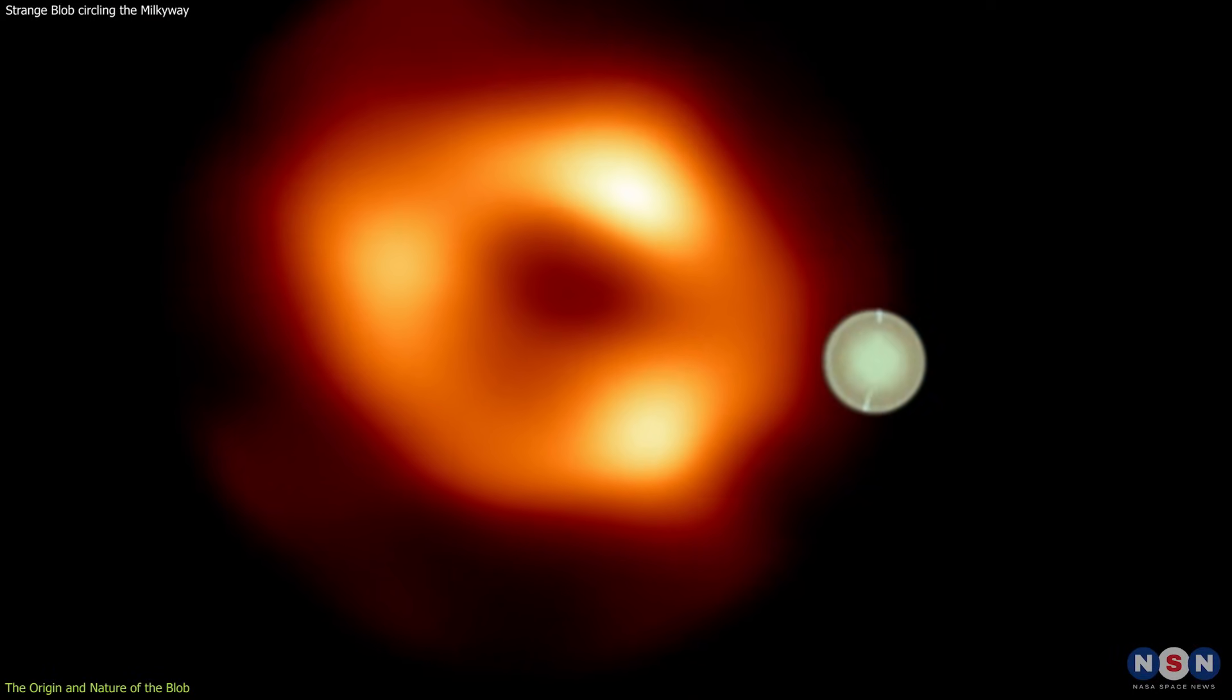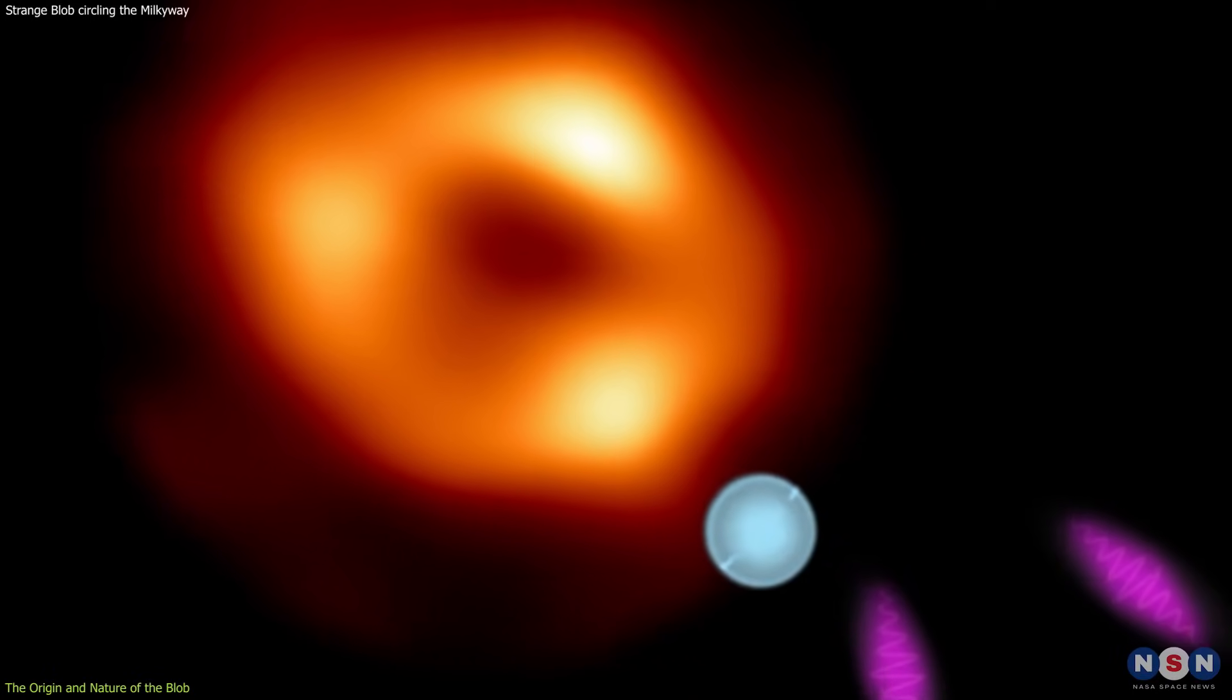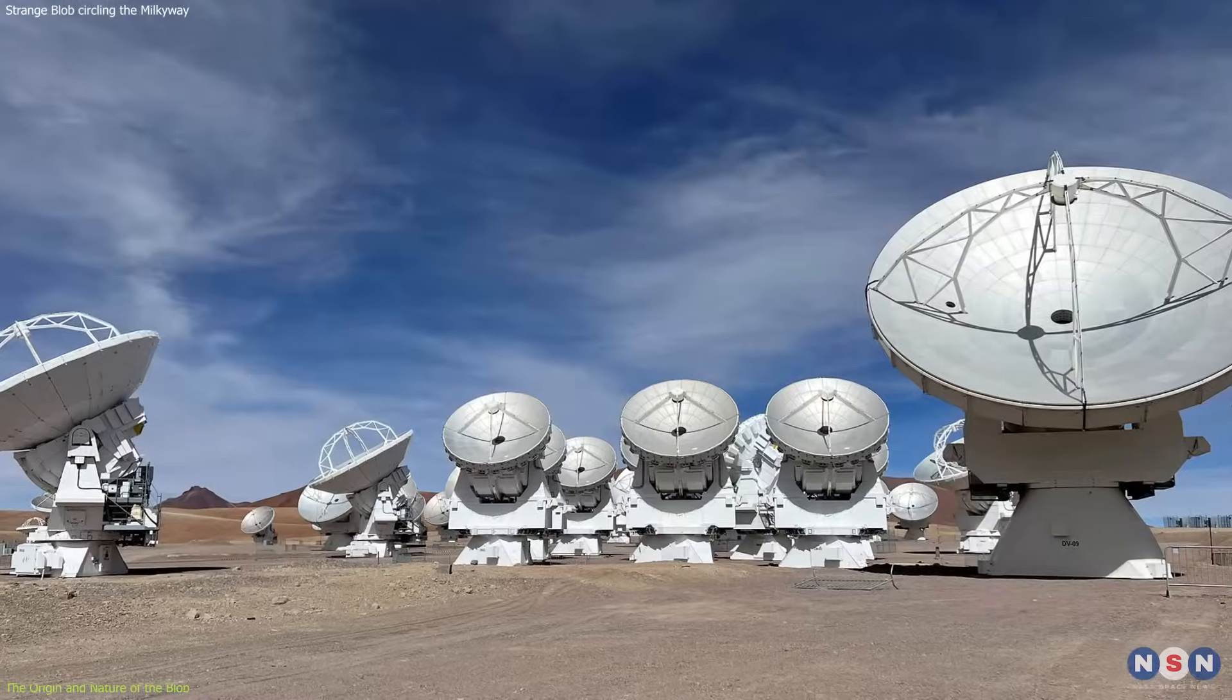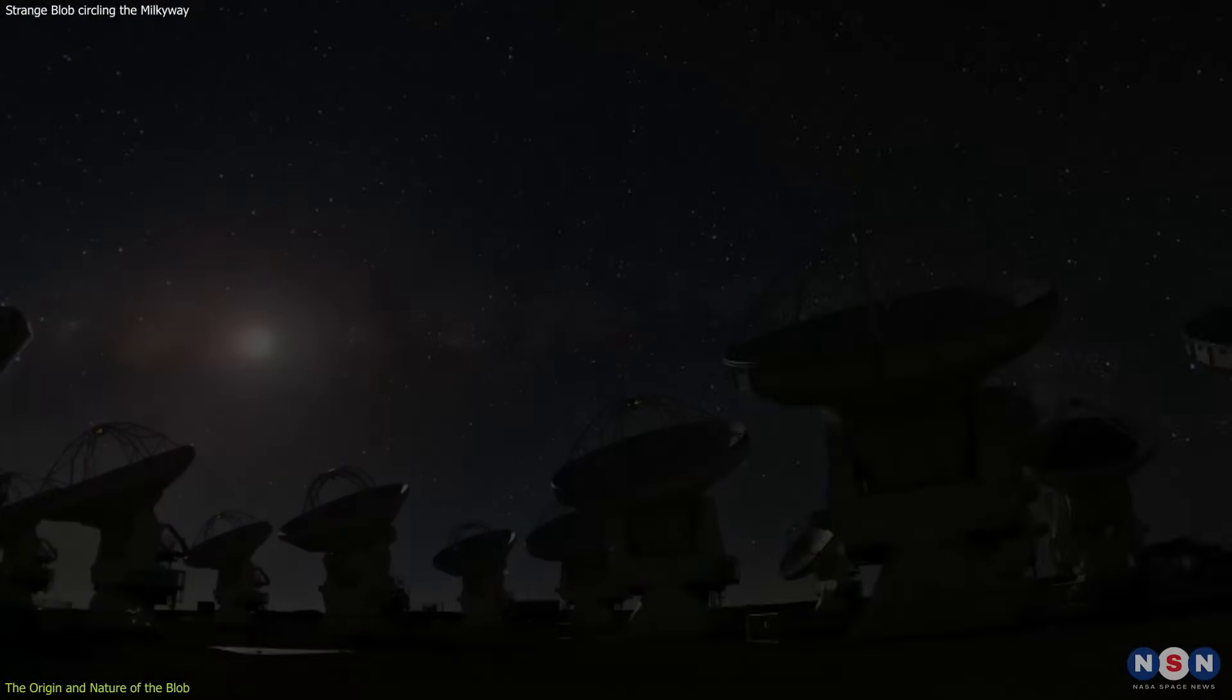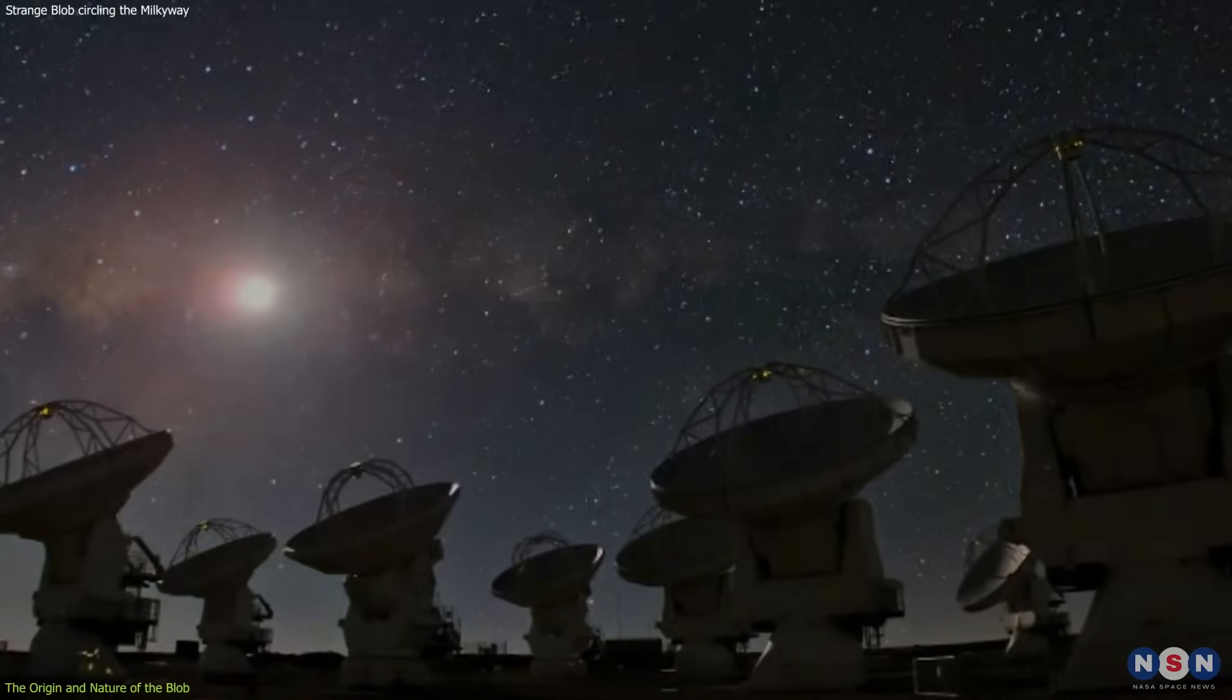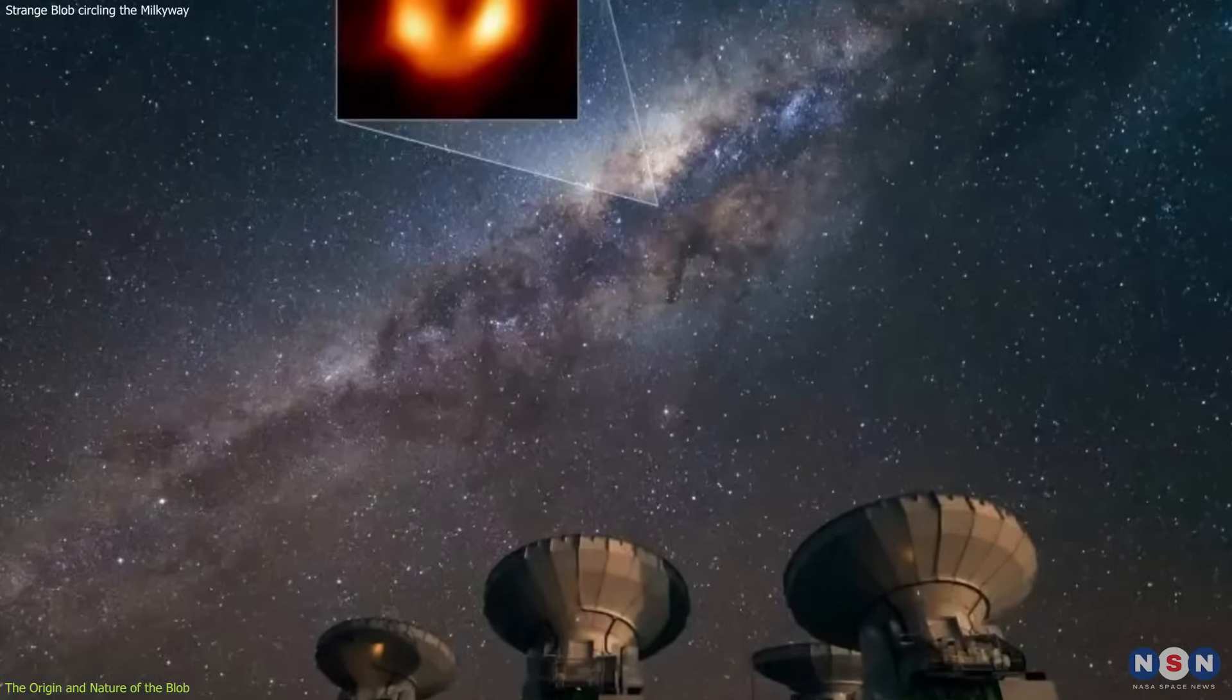Then, as the blob cools down, it emits lower energy radiation, such as infrared and radio, which are also detected by other telescopes, such as the Atacama Large Millimeter Submillimeter Array, ALMA, and the Event Horizon Telescope.